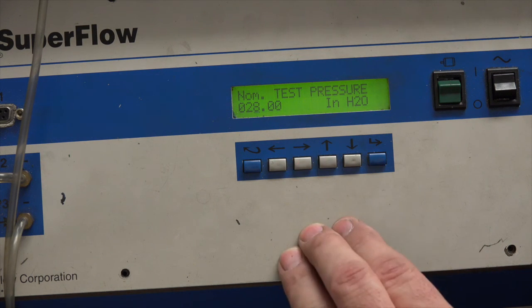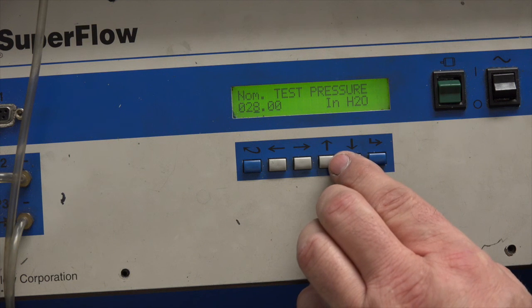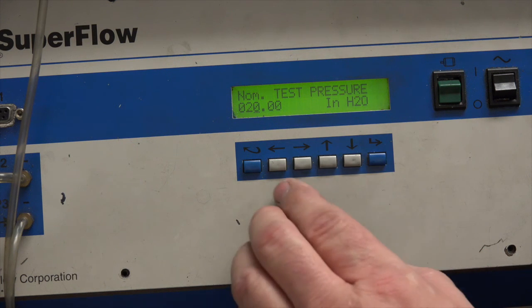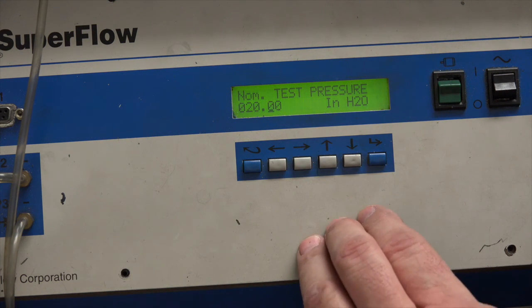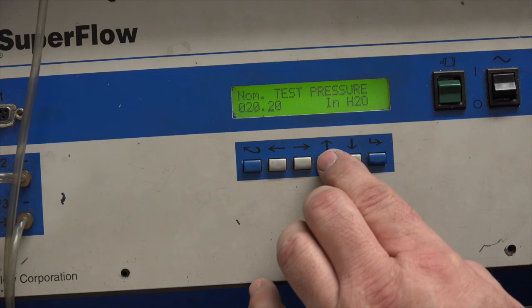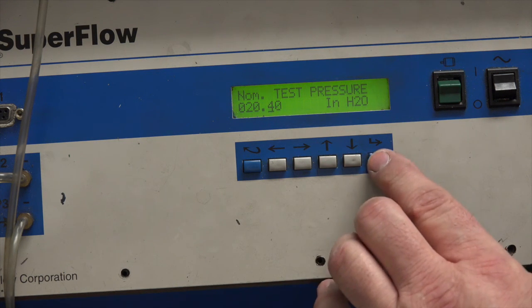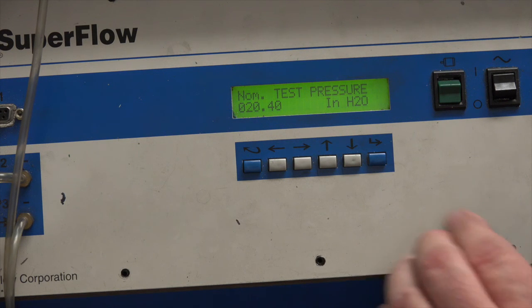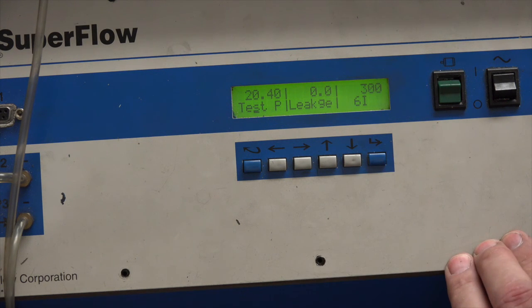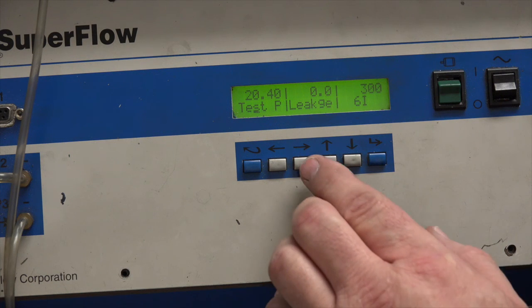We need to drop it down to 20.4 inches of water to flow our carburetors. I don't know who came up with that value, but that is the value that is used when checking the CFM of carburetors. So there I've got it set. I don't need the leakage there, so I need to get out of that.